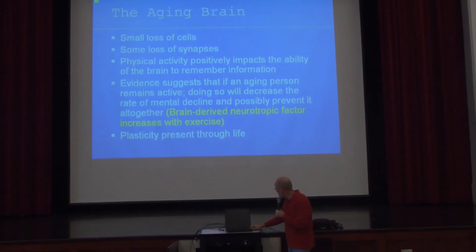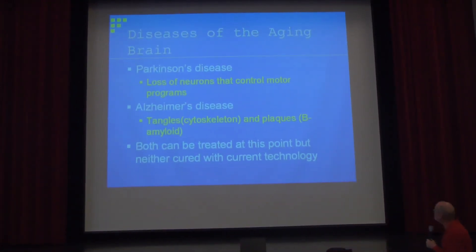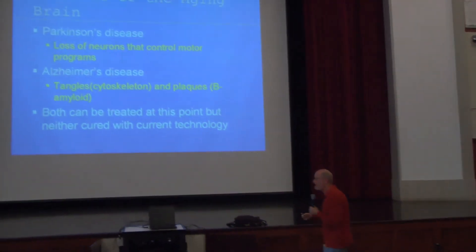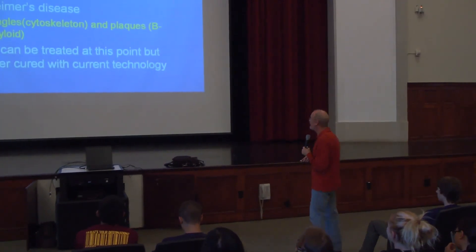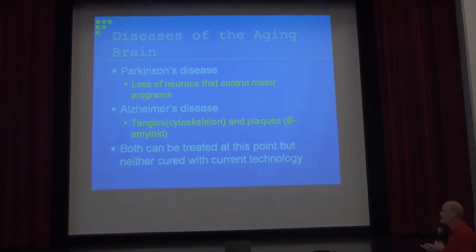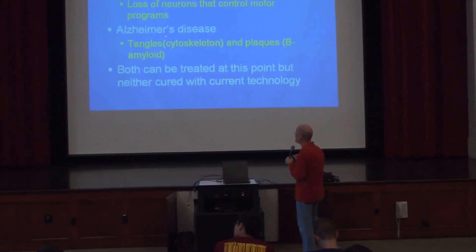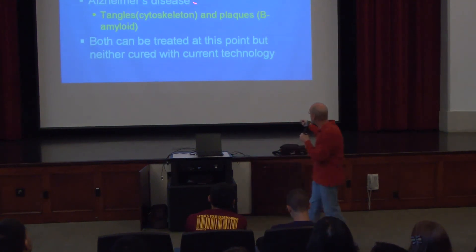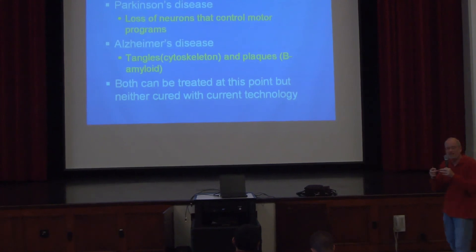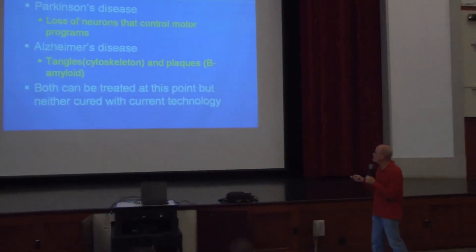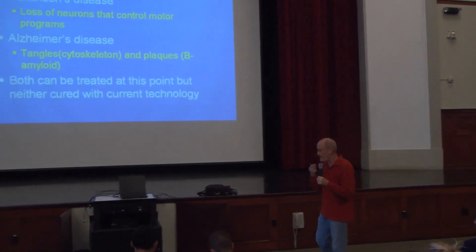Parkinson's involves a loss of a specific set of neurons that controls motor programs, causing motor issues and decreased capacity — it can be alleviated to a certain extent by drugs. Alzheimer's involves tangles and plaques: changes in the architecture of individual neurons so they get tangled up, and the deposition of beta-amyloid forming plaques or smudges within the brain that interfere with function. Neither of these things can currently be cured, but there are interesting advances in research.